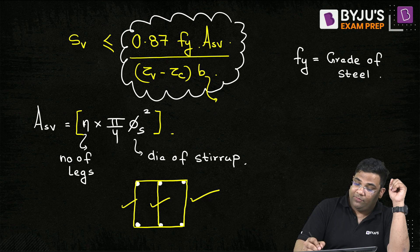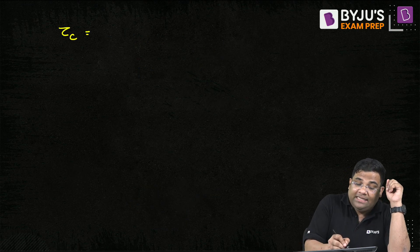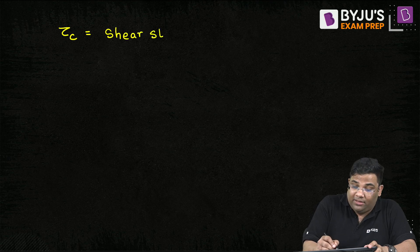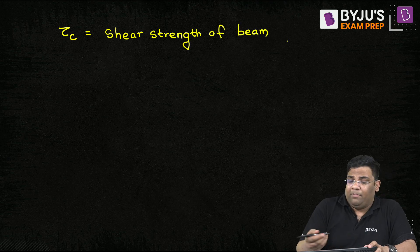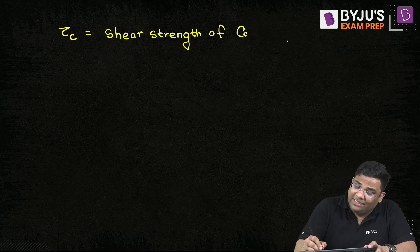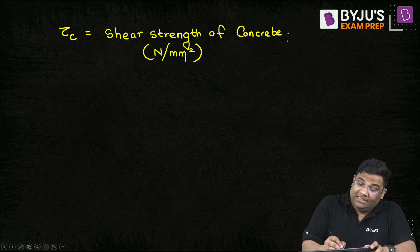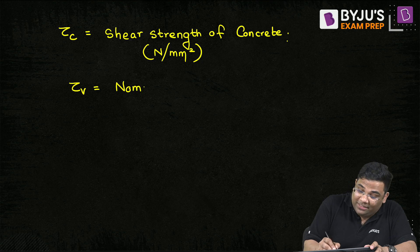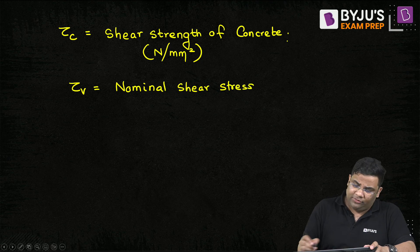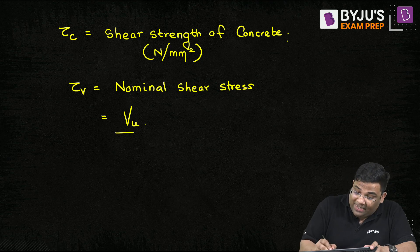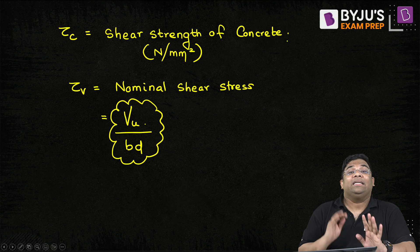B is the width of the beam. τc is the shear strength of the beam — or shear strength of concrete — expressed in N/mm². τv is the nominal shear stress, which equals the factored shear force divided by the effective area, i.e., b × d (width × effective depth). This gives you τv.